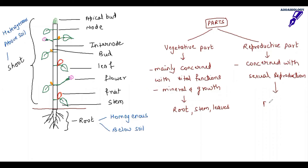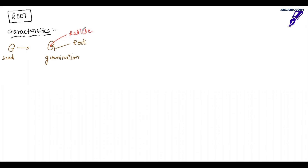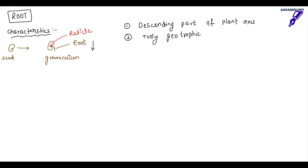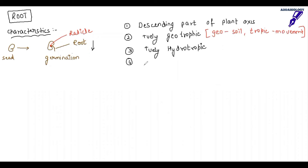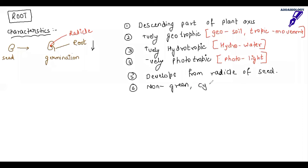The reproductive parts are concerned with sexual reproduction, and sexual reproduction takes place only through the flower. Now let us talk about root in detail. When a seed germinates, the first part that emerges out is the radicle, and the radicle gives rise to the root; after root, what comes out is the shoot. Root is the descending part of the plant axis — positively geotropic (geo means soil, tropic means movement), positively hydrotropic (moving towards water), and negatively phototropic (moves away from sunlight). It develops from the radicle of the seed and is non-green and cylindrical.